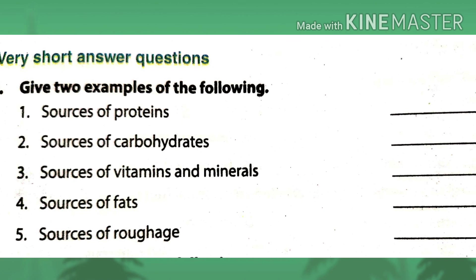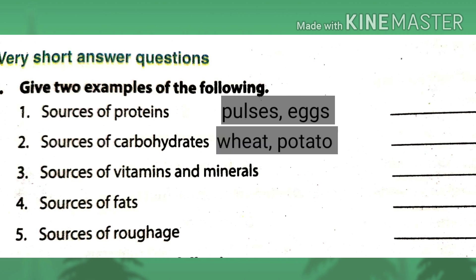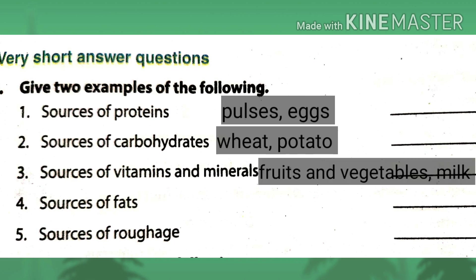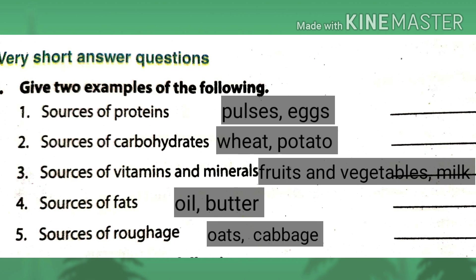Now give two examples. Sources of proteins: cheese, pulses, soya bean, milk, eggs, etc. Sources of carbohydrates: wheat, rice, potato, sugar, bananas, mangoes, etc. Sources of vitamins and minerals: fruits, vegetables, fish, egg, milk, etc. Sources of fats: oil, butter, cheese, ghee, dry fruits, etc.